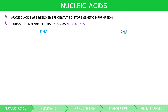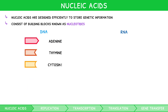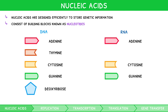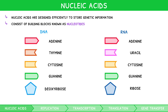In DNA, there are four different nitrogenous bases: adenine, thymine, cytosine, and guanine. The sugar component is made of deoxyribose, and the phosphate region is simply a phosphate group. In RNA, the nitrogenous bases are the same, except thymine is replaced with uracil. In addition, the sugar component is made of ribose. The phosphate region is identical.